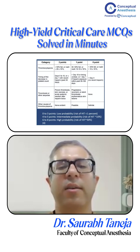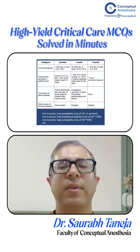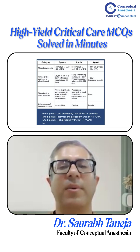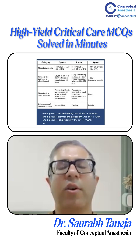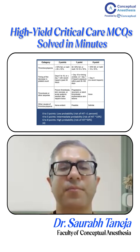The total score ranges from 0 to 8. A score of 0 to 3 is low probability of HIT, less than 1%. A score of 4 to 5 is intermediate probability, around 10%. A score of 6 to 8 is high probability, around 50%. In the question, the score was 6, so we must stop heparin and start an alternative anticoagulant — in this case, a direct thrombin inhibitor such as argatroban.